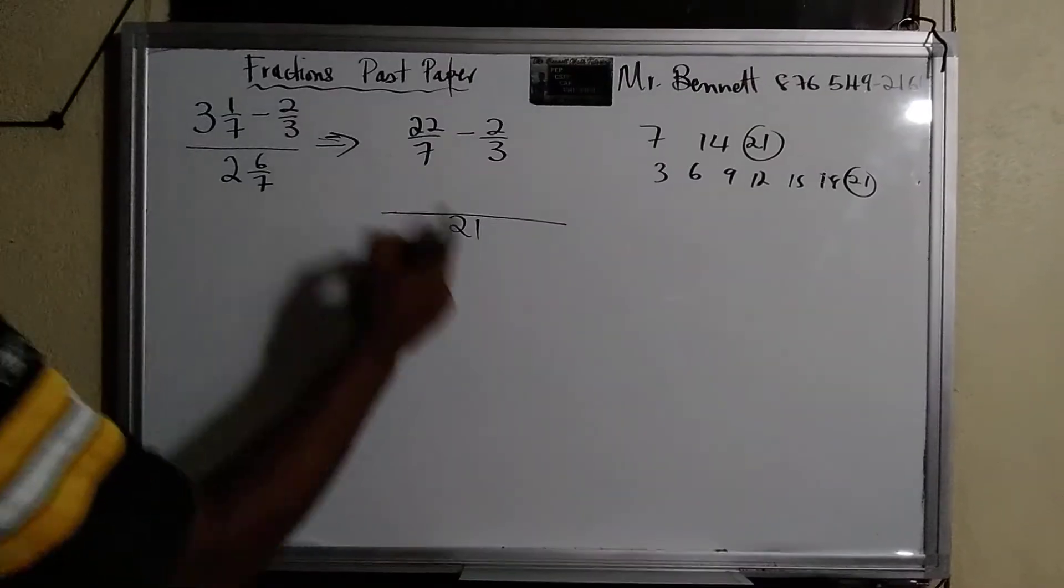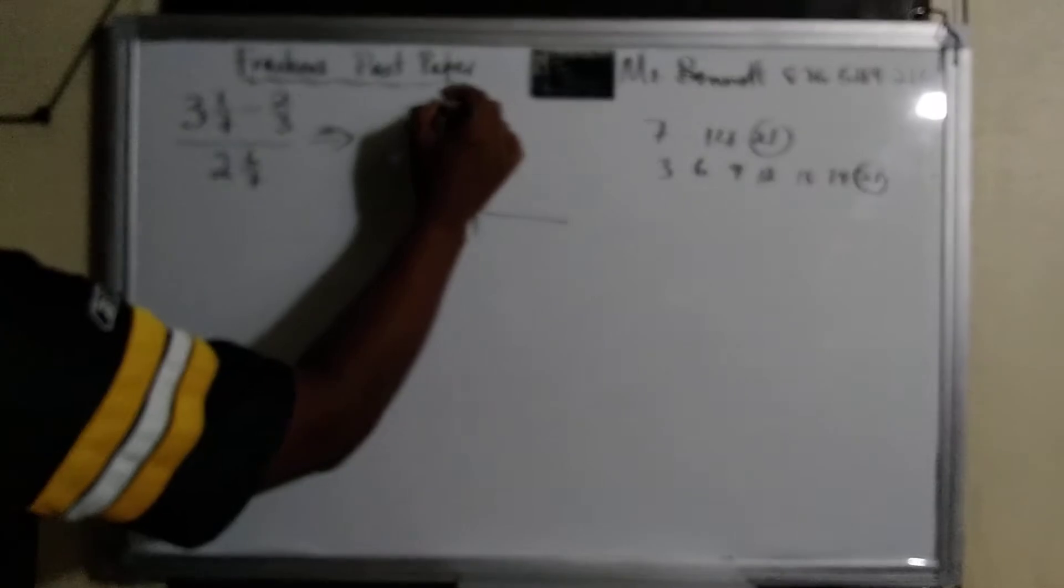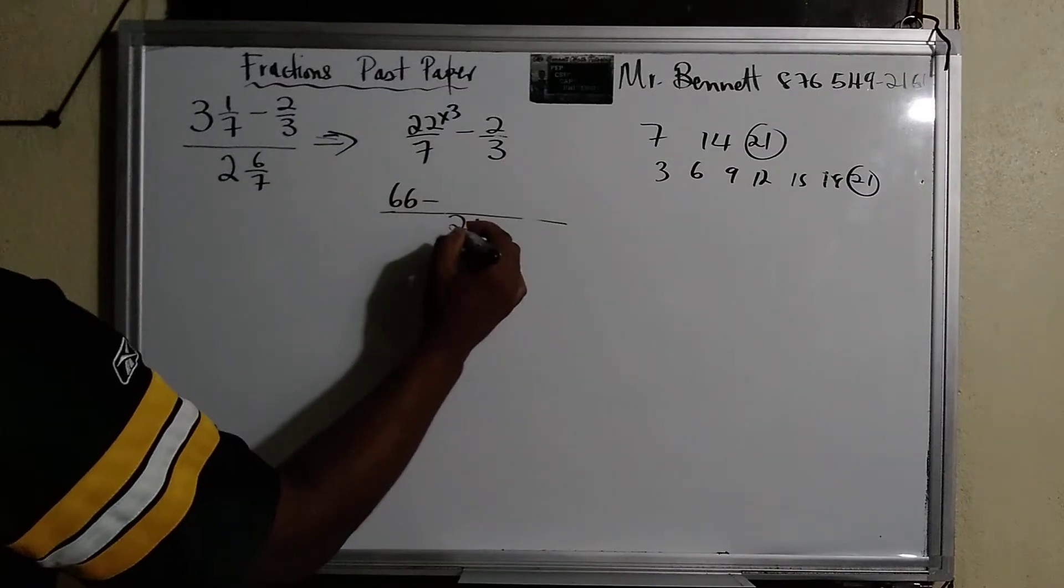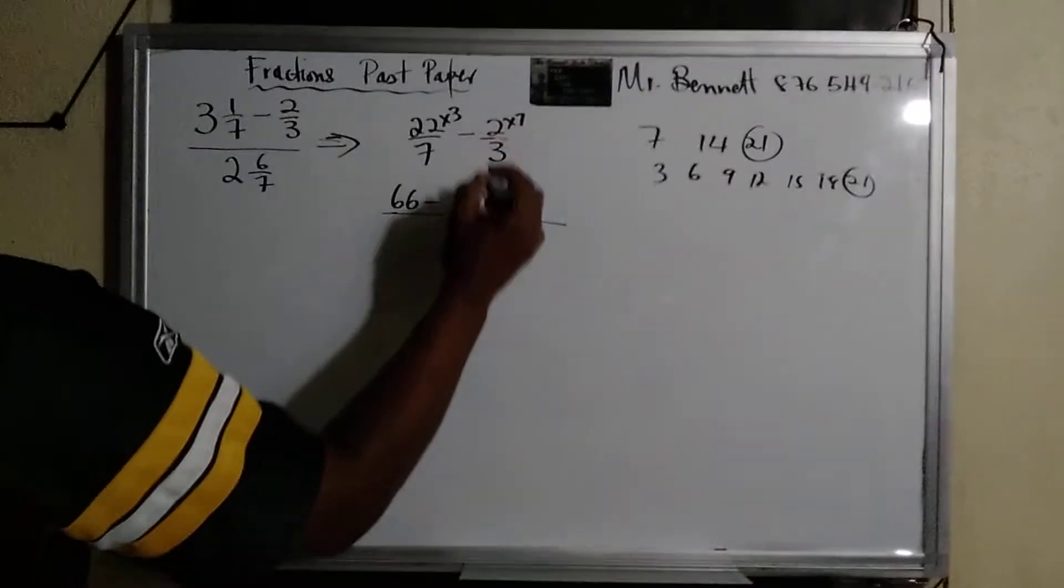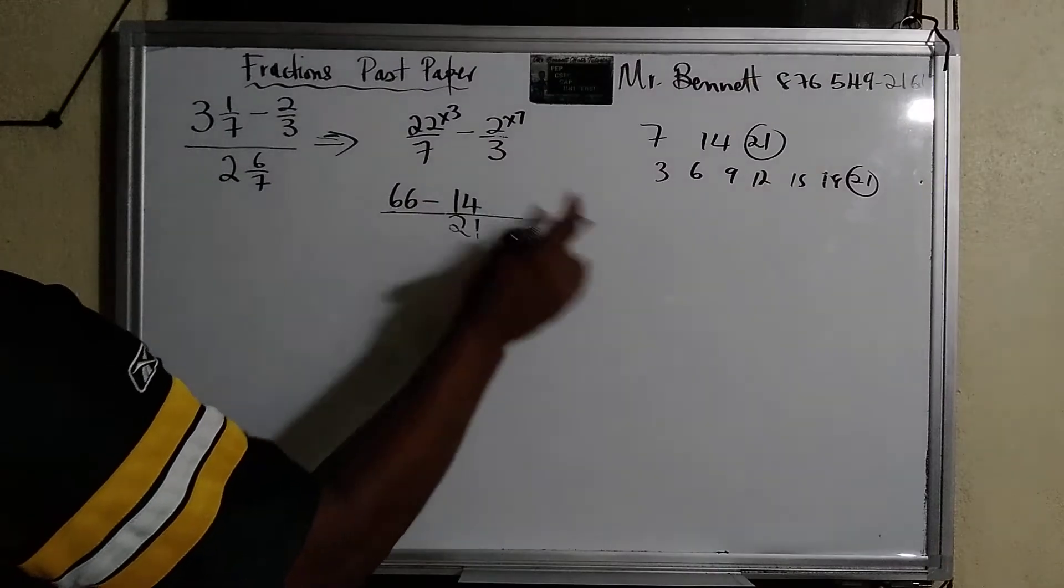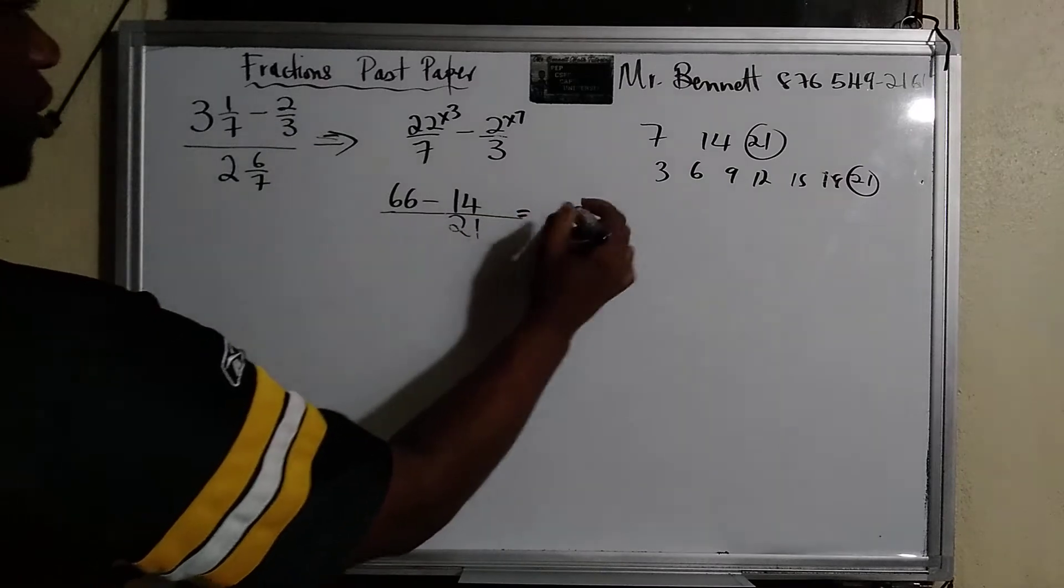Alright, the one I take further. Seven into twenty-one goes three times. We multiply that, so that gives us sixty-six. Three into twenty-one goes seven times. We multiply that, we get forty-two. Now all of these is sixty-six minus fourteen, that gives us...